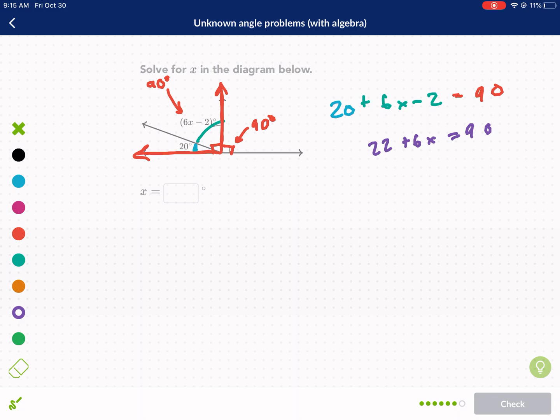We have 22 plus 6X equals 90. Wait, 20 plus 6X minus 2, that's 18. So I need to do, this is 18. So I got to do 90 minus 18. And I get 72. So I get 72 equals, minus 18, minus 18. So then 72 divided by 6. And that gives me 12. And that's my final answer.